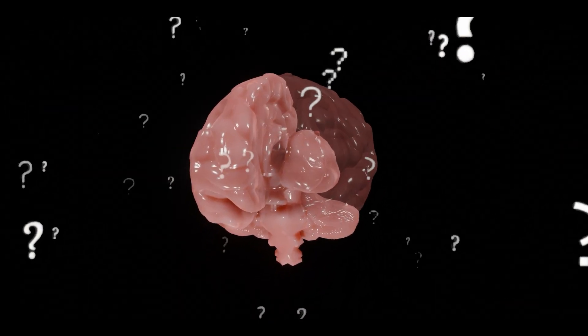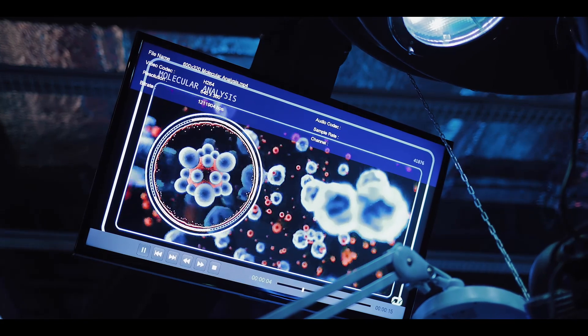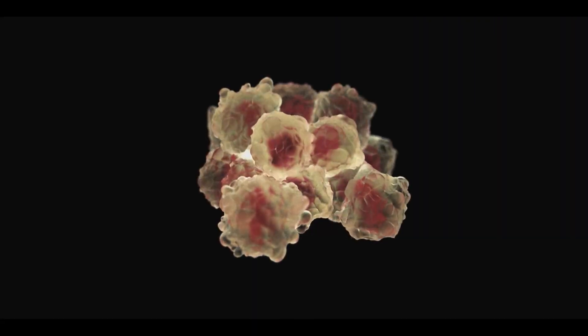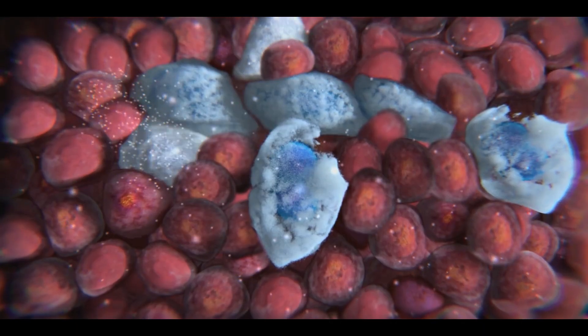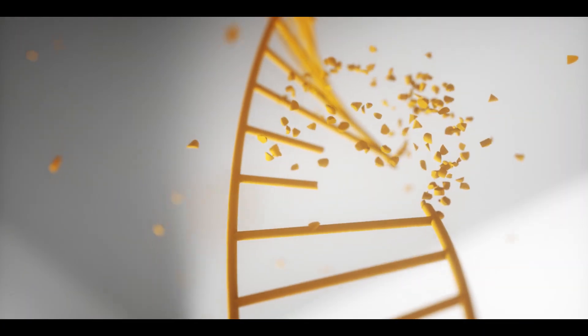Let's know why and how gliomas develop. First of all, we understand a general concept about tumors. Tumors form due to abnormal growth of our body cells. Secondly, tumors are mostly related to mutations, meaning changes in DNA of our cells.